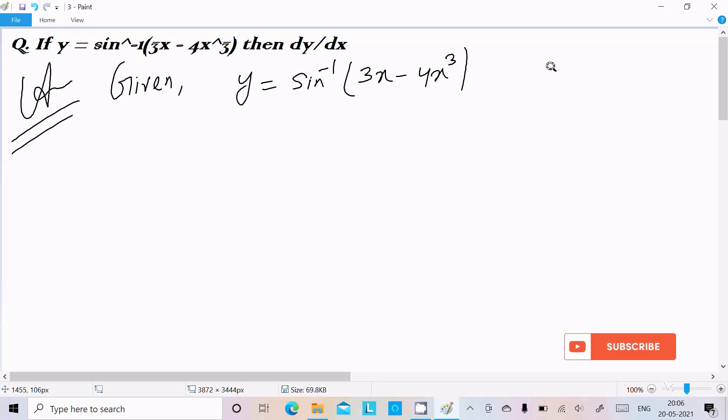If you follow that way it will be more complicated to solve. So let me assume x = sin θ, or we can write θ = sin⁻¹x. I assume sin θ because the sin 3θ formula is 3 sin θ - 4 sin³θ. This is the formula.